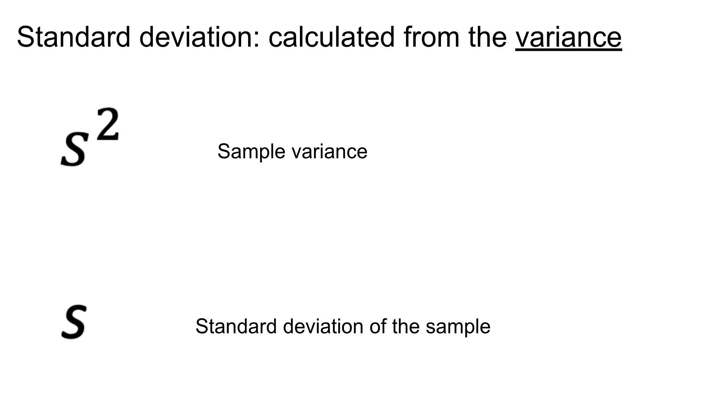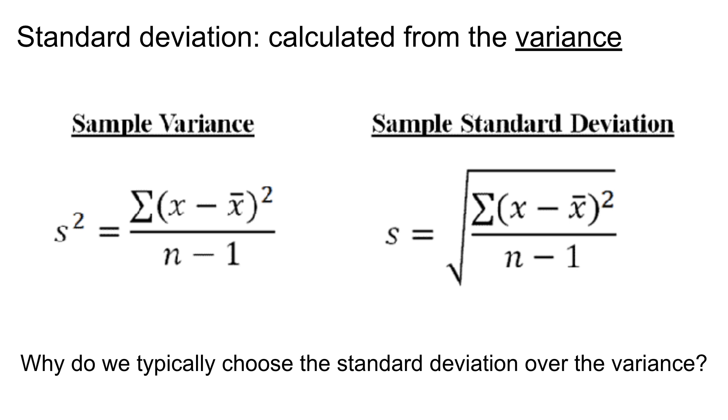So our standard deviation is actually calculated from another measurement which is called variance which is designated by s squared. But today we're going to be focusing on standard deviation and in general folks typically choose standard deviation over variance because it's in the same units as our original observation. So here in sample variance you'll see s squared gives us the squared deviation of our observations which is in a different unit than our original observations which is less intuitive.